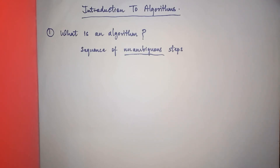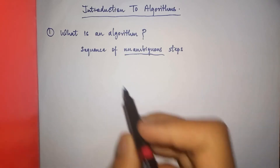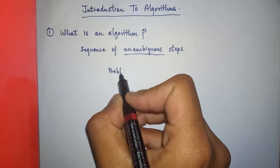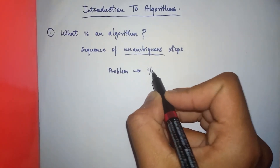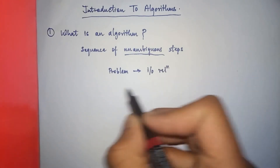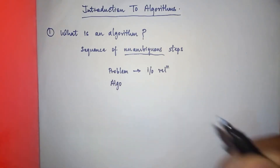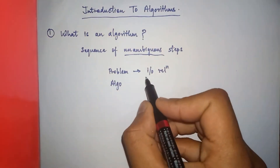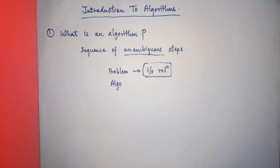Whenever you read the problem statement, you get an idea of what the input-output relation is. The problem corresponds to the IO relation, and the algorithm provides a computational procedure to achieve that IO relation. In other words, an algorithm is just a tool for solving a well-defined computational problem.